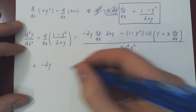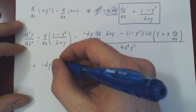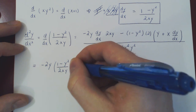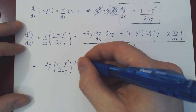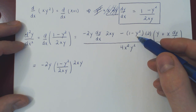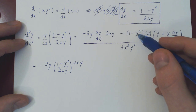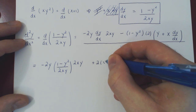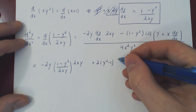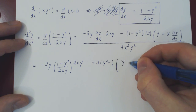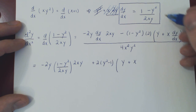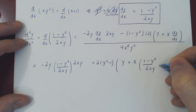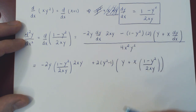Substituting: negative 2y times dy/dx — replacing dy/dx — times 2xy. Bringing the negative in gives y² minus 1, and pulling the 2 out front gives plus 2 times (y² minus 1). Then for the term with y plus x times dy/dx, we substitute (1 minus y²) over 2xy, and the whole thing is again over 4x²y².